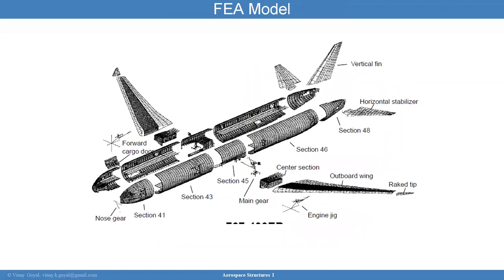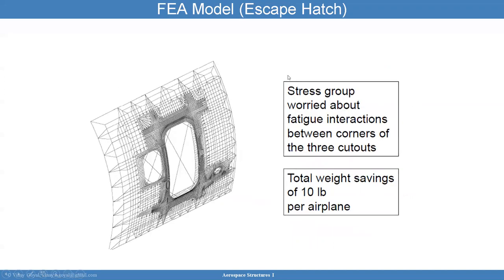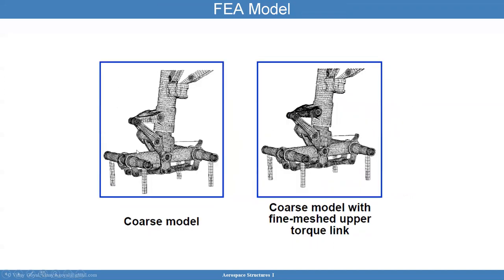Basically, you have a big dynamic model, you can apply the loads, get the section cuts, and then from these cuts you can get the loads, which you can then apply in a local section and increase the mesh density in areas of concern.